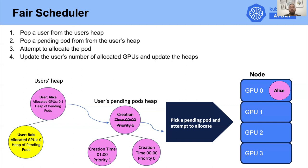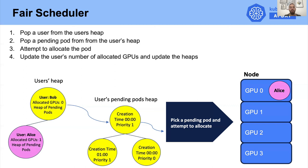Notice that at the end of the user heap, we always have the most starved user. This helps us achieve fairness because we know who is the most starved user — and that is the one who should get the next GPU.